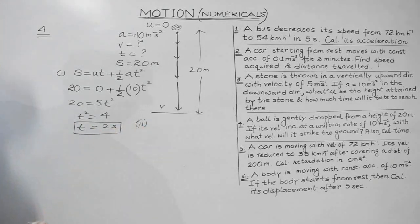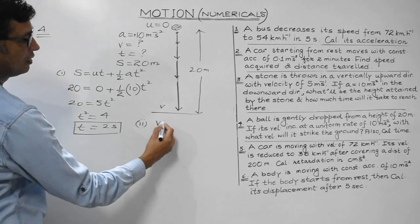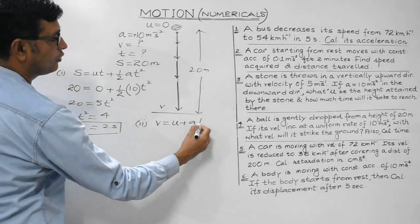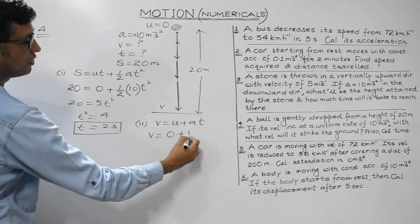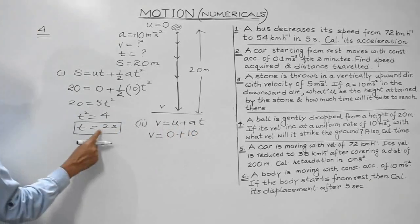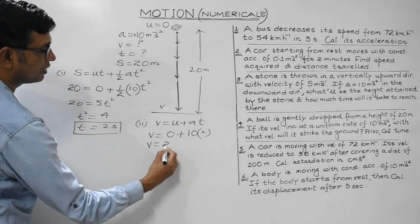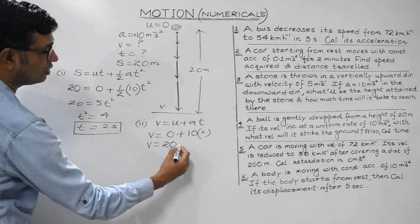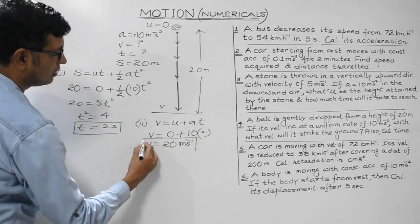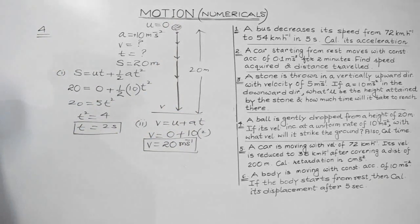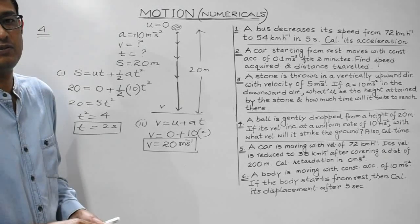For the final velocity, using the first equation v = u + at: v = 0 + 10 × 2 = 20 m/s. The ball strikes the ground with a final velocity of 20 m/s. Simply make use of the appropriate equation of motion.